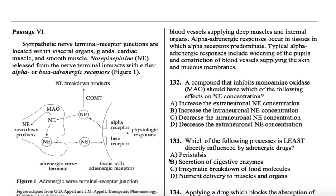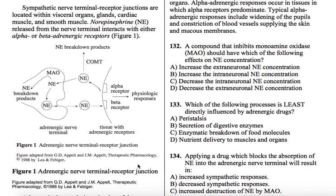So this passage says: sympathetic nerve terminal receptor junctions are located within visceral organs, glands, cardiac muscle, and smooth muscle. Norepinephrine — which we know is a neurotransmitter used in the sympathetic nervous system — released from the nerve terminal interacts with either alpha or beta adrenergic receptors. And here is a figure that describes that.